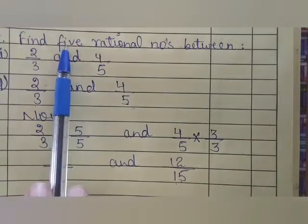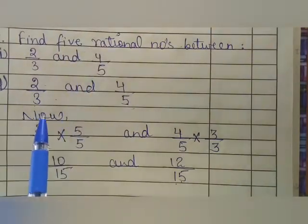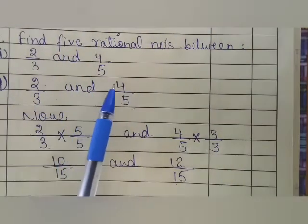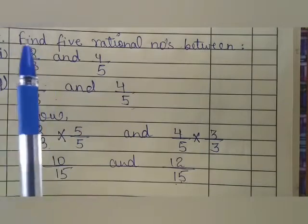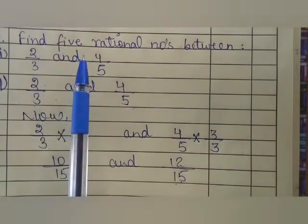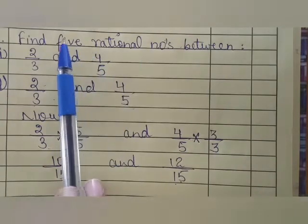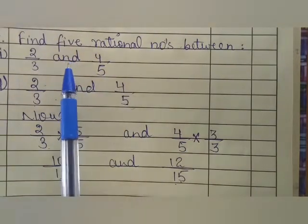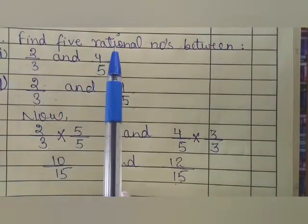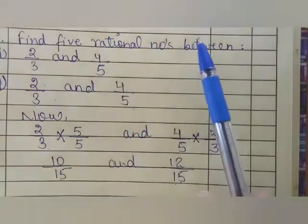For example, if they are asking for 2 numbers, we will multiply it by 3. If they are asking for 5 numbers, we will multiply it by 6. If they are asking for 10 numbers, we will multiply it by 11.